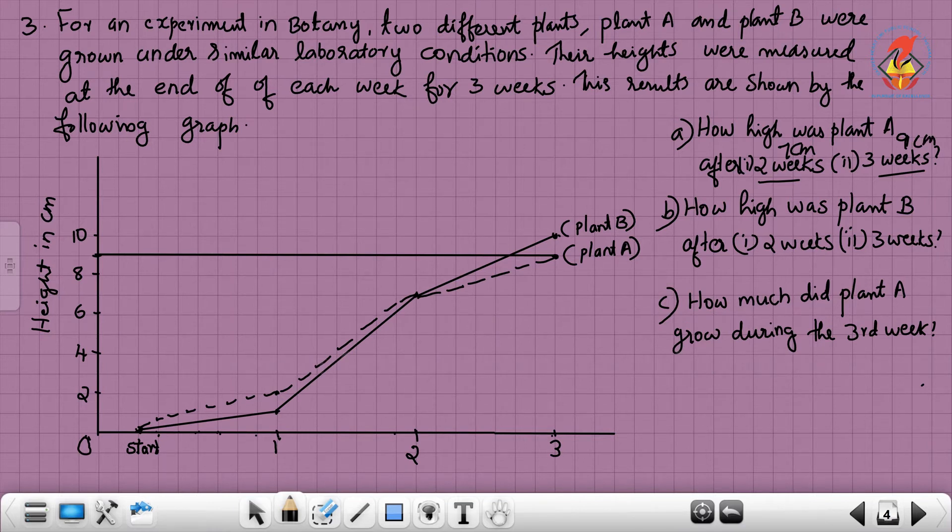How high was plant B after two weeks? Plant B is the straight line. Plant B at two weeks is 7 centimeters. In the third week, plant B is 10 centimeters. How much did plant A grow during the third week? Plant A in the second week was 7 centimeters, and in the third week 9 centimeters. What is the difference between 7 centimeters and 9 centimeters? 9 centimeters minus 7 centimeters equals 2 centimeters. During the third week, it grows 2 centimeters.